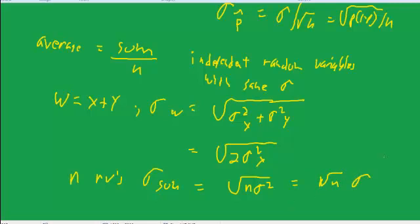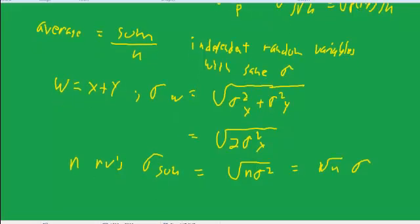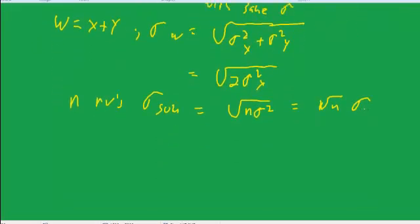We take the square root of what's inside, pull the square root of n out, and get sigma times the square root of n. That's the sum.